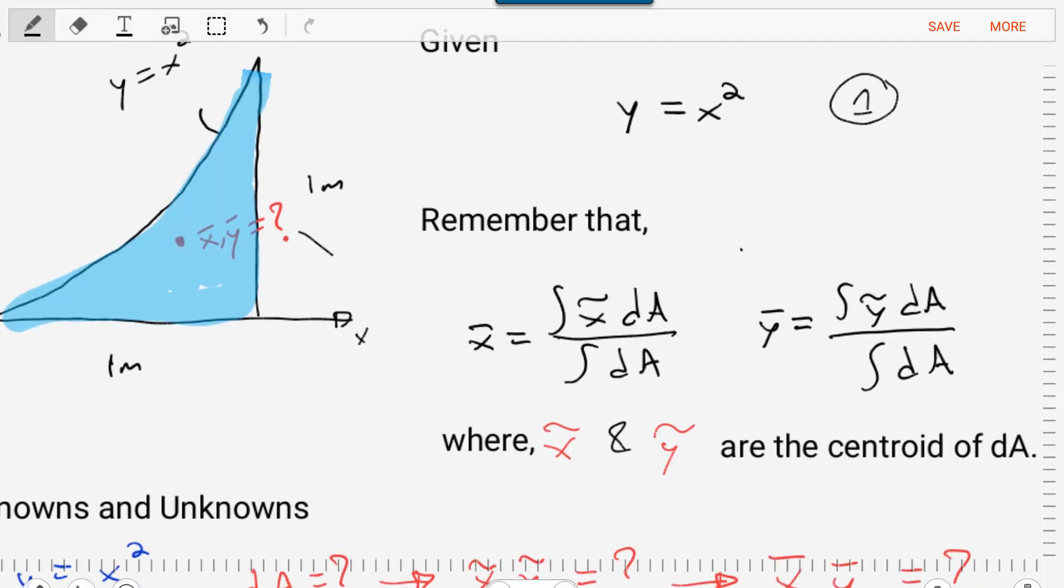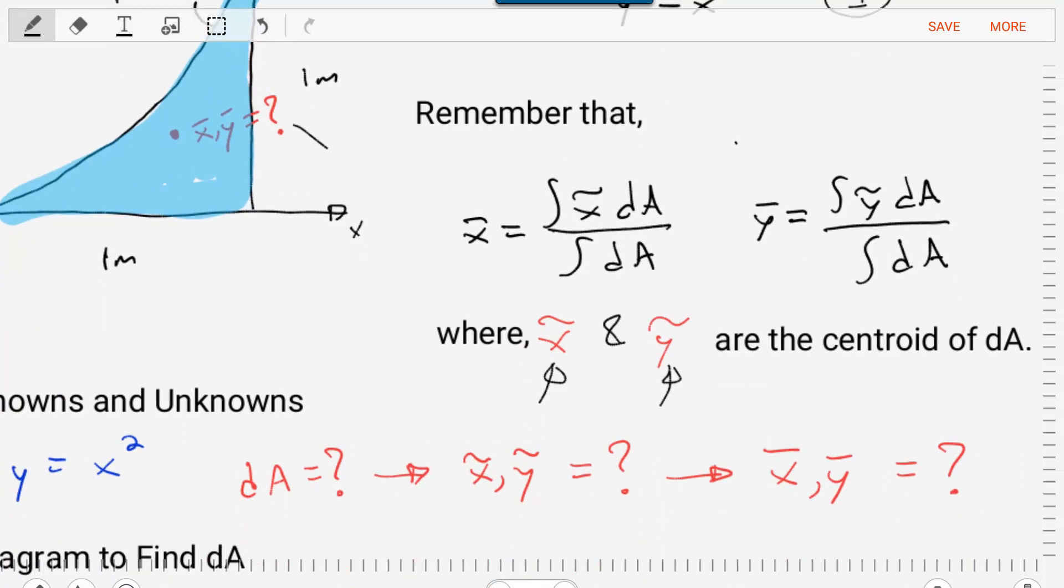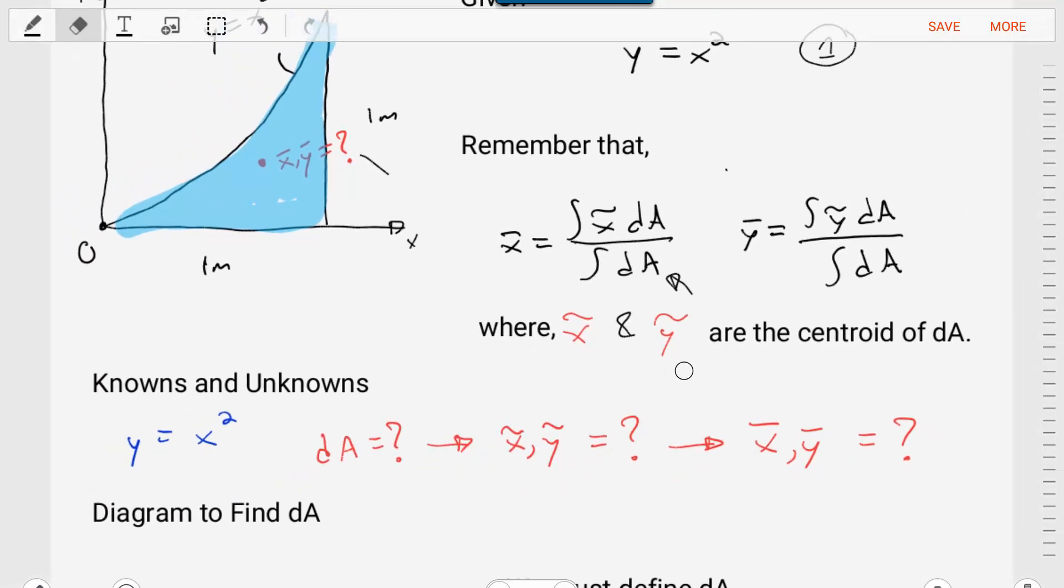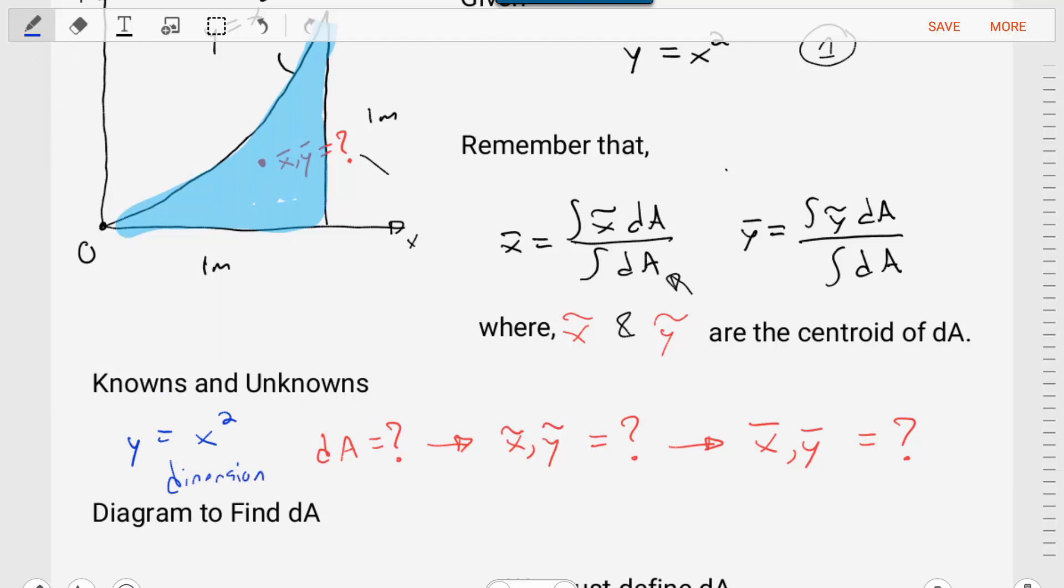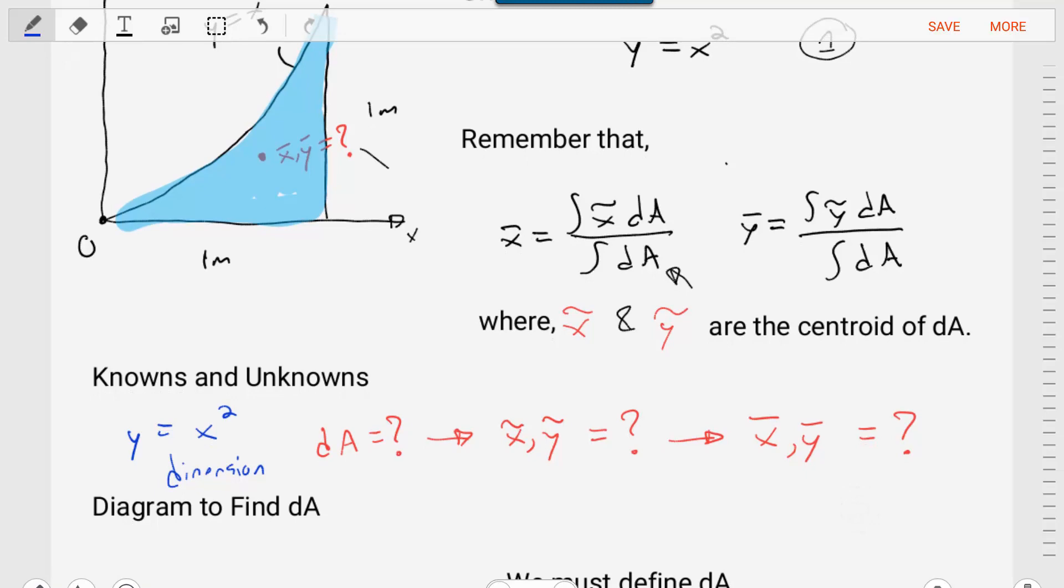We'll note that the differential area, we'll have to choose one. We'll have to define what is this DA, what is this little increment that I'm integrating over. Once we have those three pieces, we can solve for the centroid. We can find the X bar and the Y bar. Let's start with finding the differential area, DA.